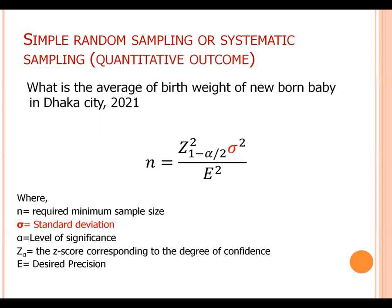Where sigma is standard deviation. That means to calculate sample size based on estimating mean, we need standard deviation, level of significance, Z score value, and precision.